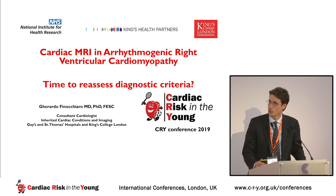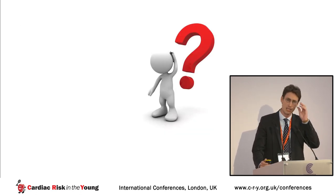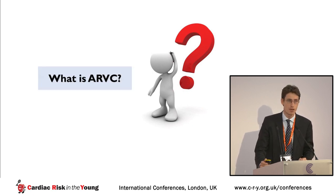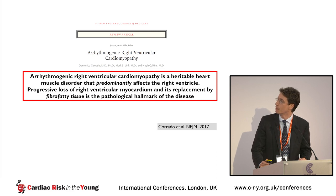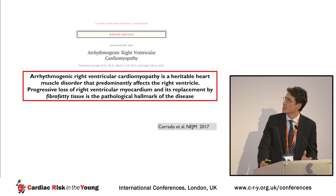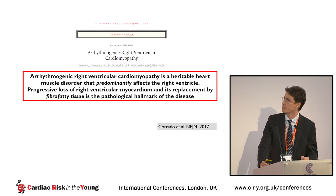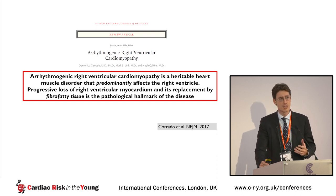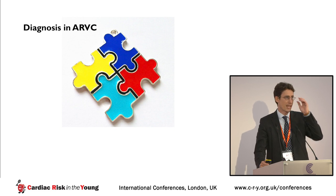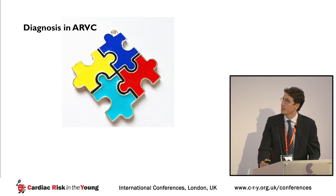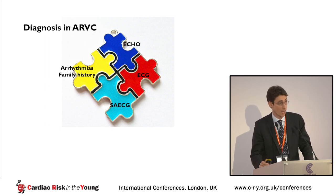I would like to thank Michael because he anticipated some of the issues we are going to discuss. I want to start with a big question: what is arrhythmogenic right ventricular cardiomyopathy? This is not so straightforward. I will use a definition from Professor Corrado's paper in the New England Journal of Medicine published two years ago. ARVC is defined as a heritable heart disease that predominantly affects the right ventricle, with the hallmark being a progressive loss of right ventricular myocardium and replacement by fibro-fatty tissue. Cardiac MRI is just one piece of the diagnostic puzzle.